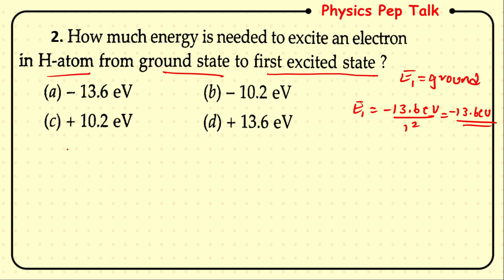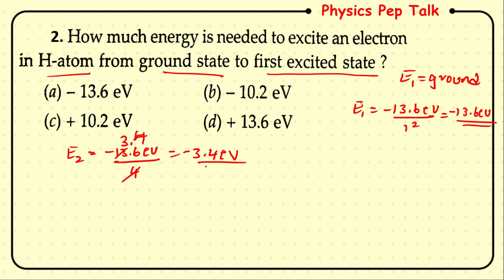The first excited state is E₂. E₂ = −13.6 eV / 2² = −13.6 / 4 = −3.4 eV. So −3.4 eV is the second energy level energy.